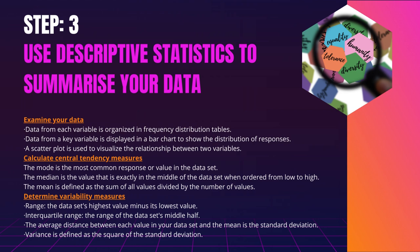Many demographic characteristics, for example, can only be described using the mode or proportions, whereas a variable such as reaction time may not have a mode at all. Determine Variability Measures. Variability Measures indicate how widely distributed the values in a data set are. There are four major measures of variability frequently reported: 1. Range: the data set's highest value minus its lowest value. 2. Interquartile Range: the range of the data set's middle half.